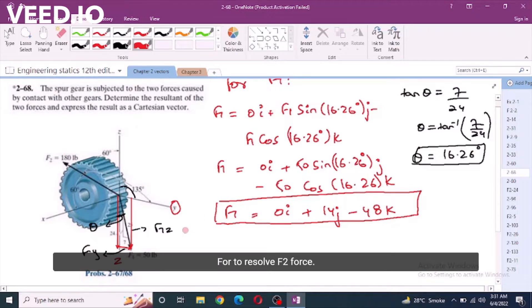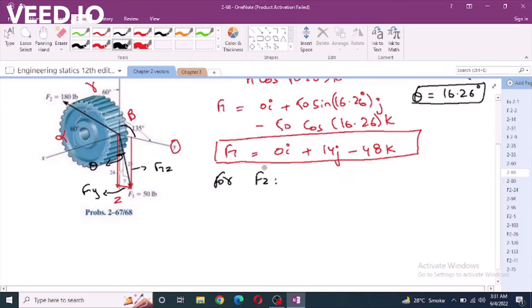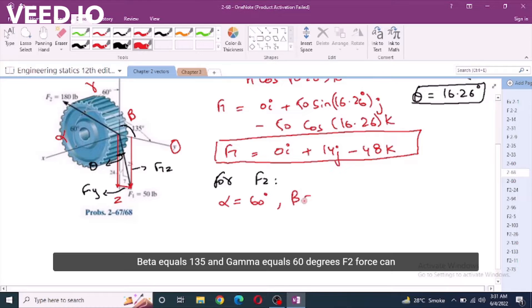Now, to resolve f2 force, we have given coordinate direction angles. Let's call this angle alpha. Let's call this angle beta and this angle gamma. For f2 force, alpha equals 60, beta equals 135 and gamma equals 60 degrees.